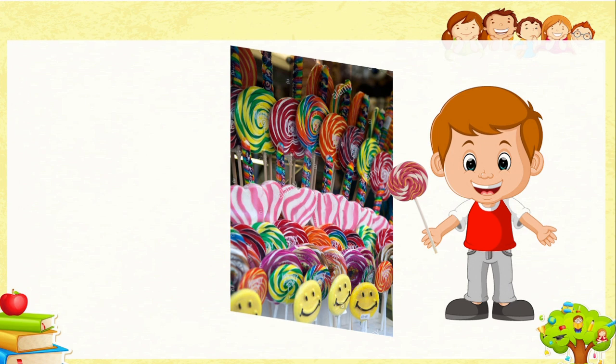How many rupees remained with that boy? He was having five rupees. The cost of one lollipop is five rupees. He gave five rupees to the shopkeeper and the shopkeeper gave him one lollipop. Nothing remained — means zero rupees.